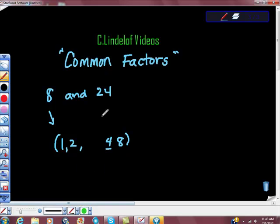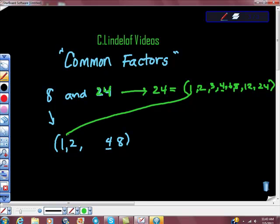And then let's do 24 in green. The factors of 24 are 1 times 24, 2 and 12, 3 and 8, 4 and 6. I would ask myself about 4 again, but I already have it. So what are the common factors there? 1, they both have 1.